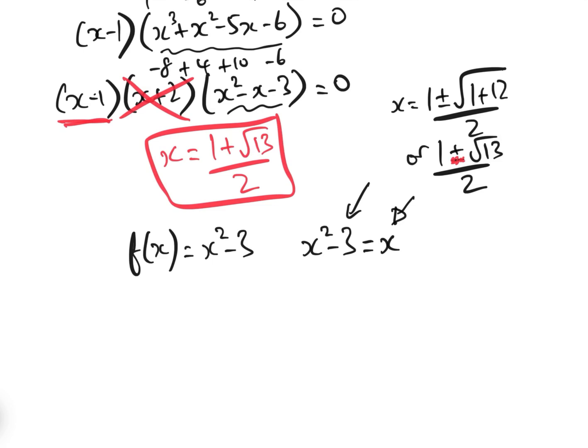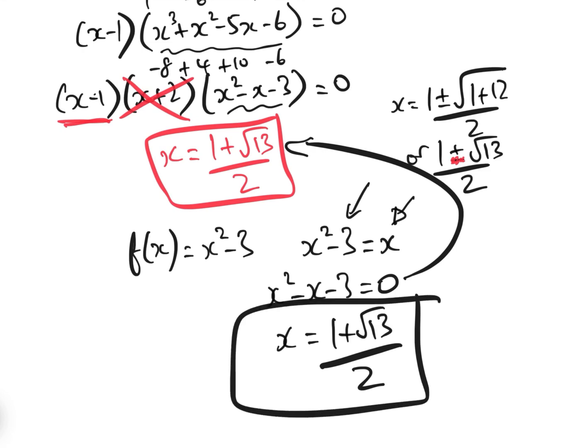We have f of x equals x squared minus 3. And so all we need to do is put x squared minus 3 equal to x, i.e. where this function f of x crosses y equals x, which we know is where the inverse would also cross, giving us x squared minus x minus 3 equals 0, which we have already solved here.